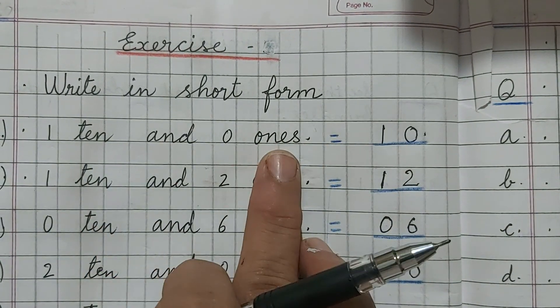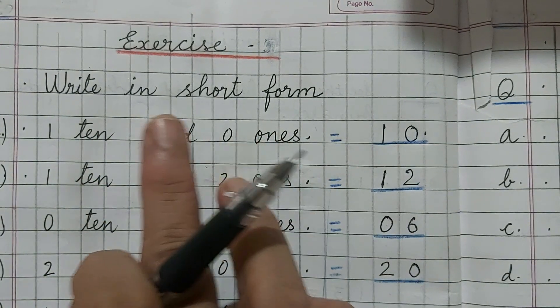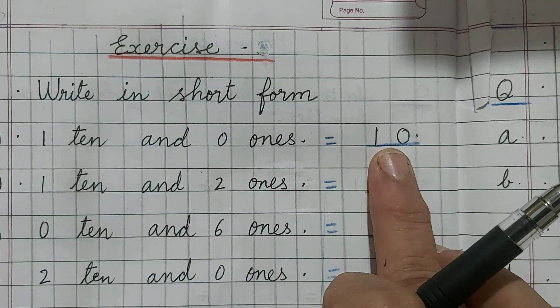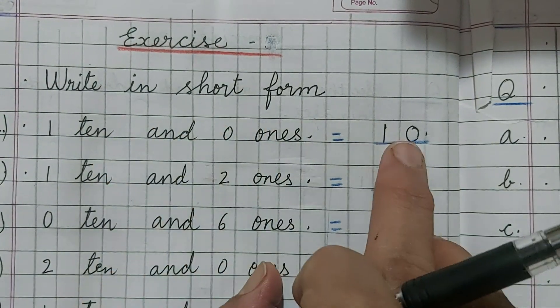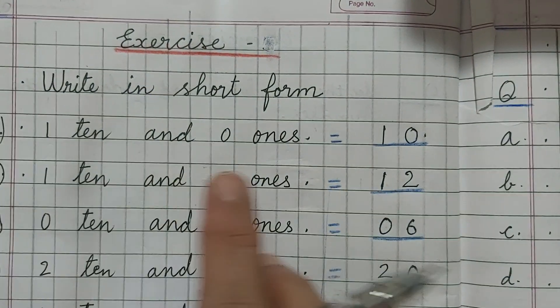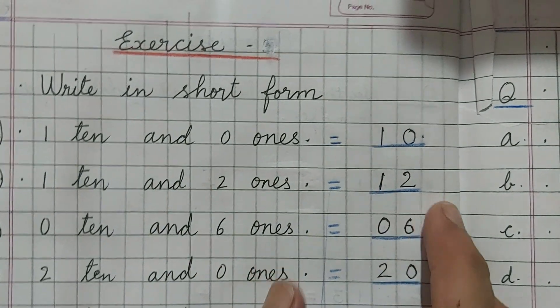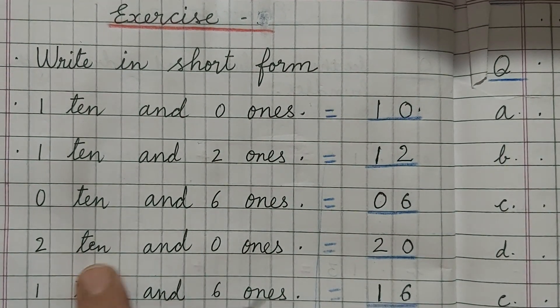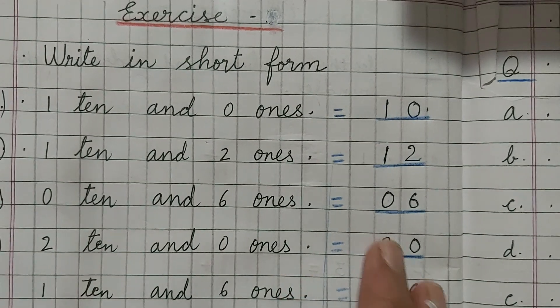Expanded form is written. Detail is written 1 ten and 0 ones and we have to take this 1 and take this 0 and write here the number. For 1 ten we will write 1 and for 0 ones we will write 0. Here 1 ten we will write 1. For 2 ones we will write 2. 12. Like this. 0 tens and 6 ones, 06. 2 tens and 0 ones, 20.